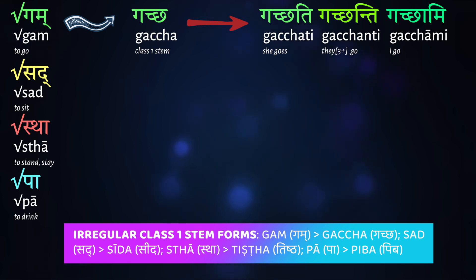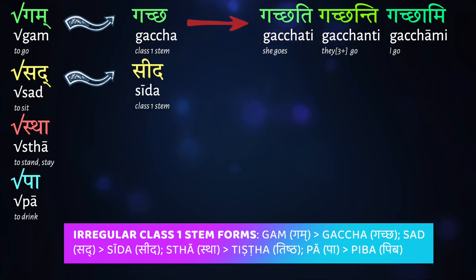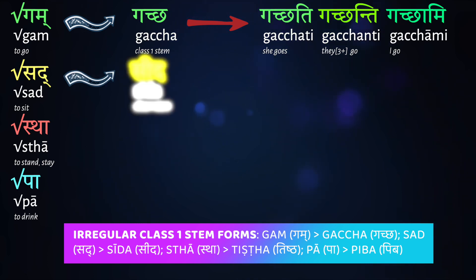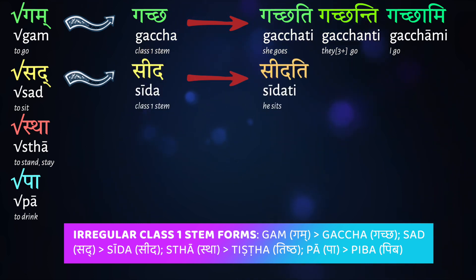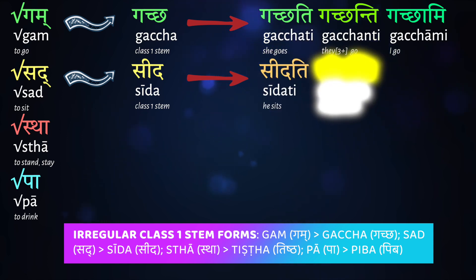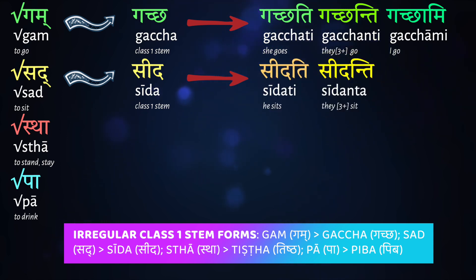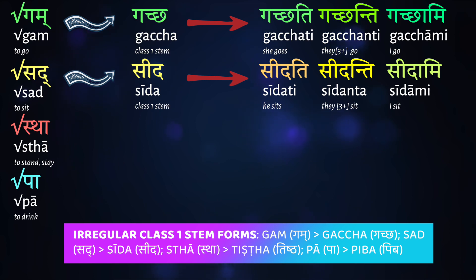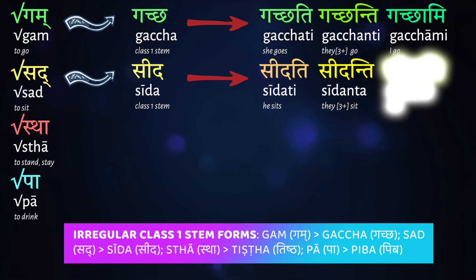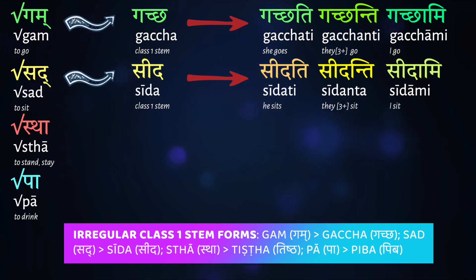Another irregular one is sad, which means 'to sit.' The stem here we would expect to be sada, but it's actually sīda. Saha sīdati, 'he sits'; te sīdanti, 'they sit'; tvaṃ sīdasi, 'you sit'; ahaṃ sīdāmi, 'I sit.'